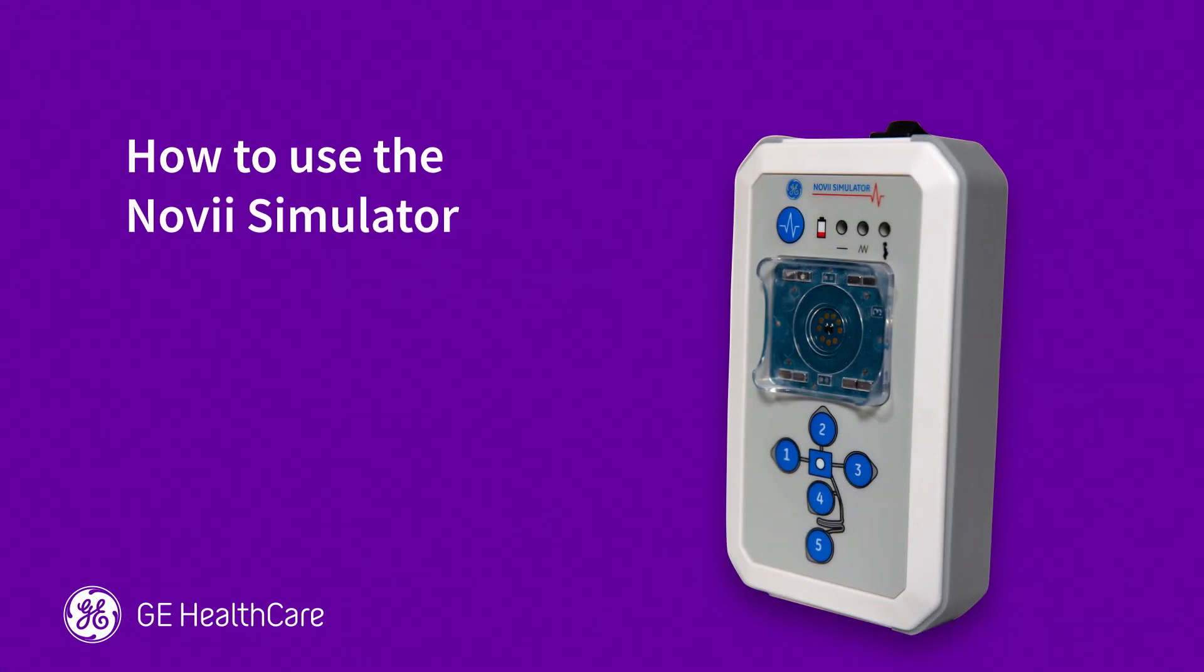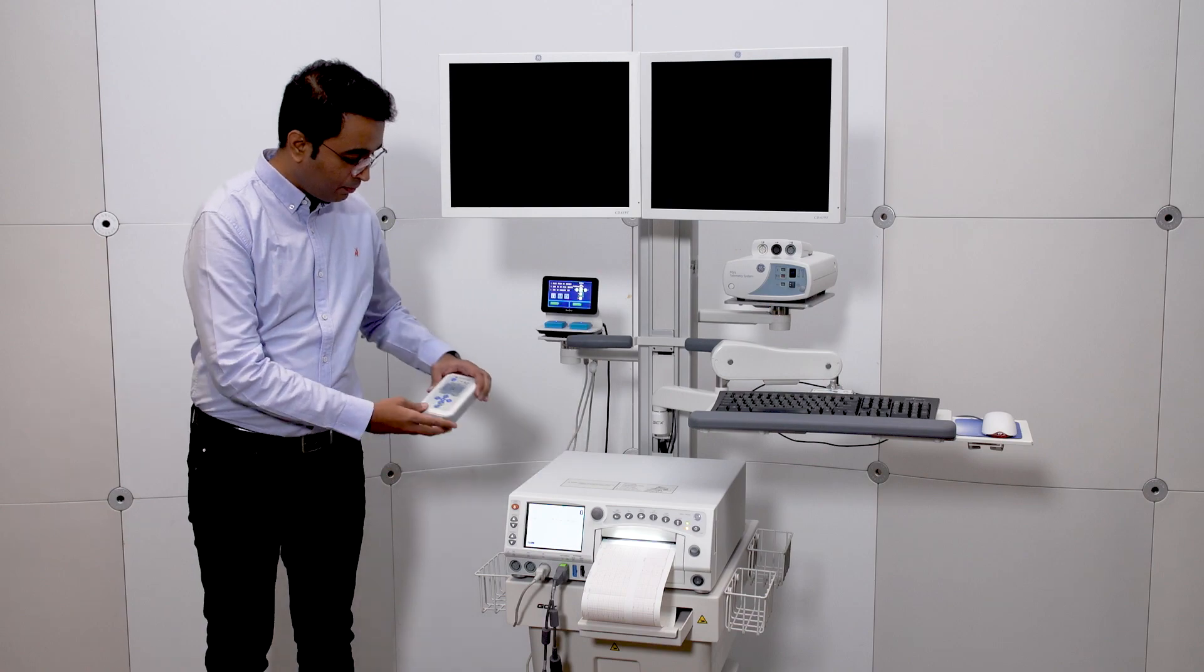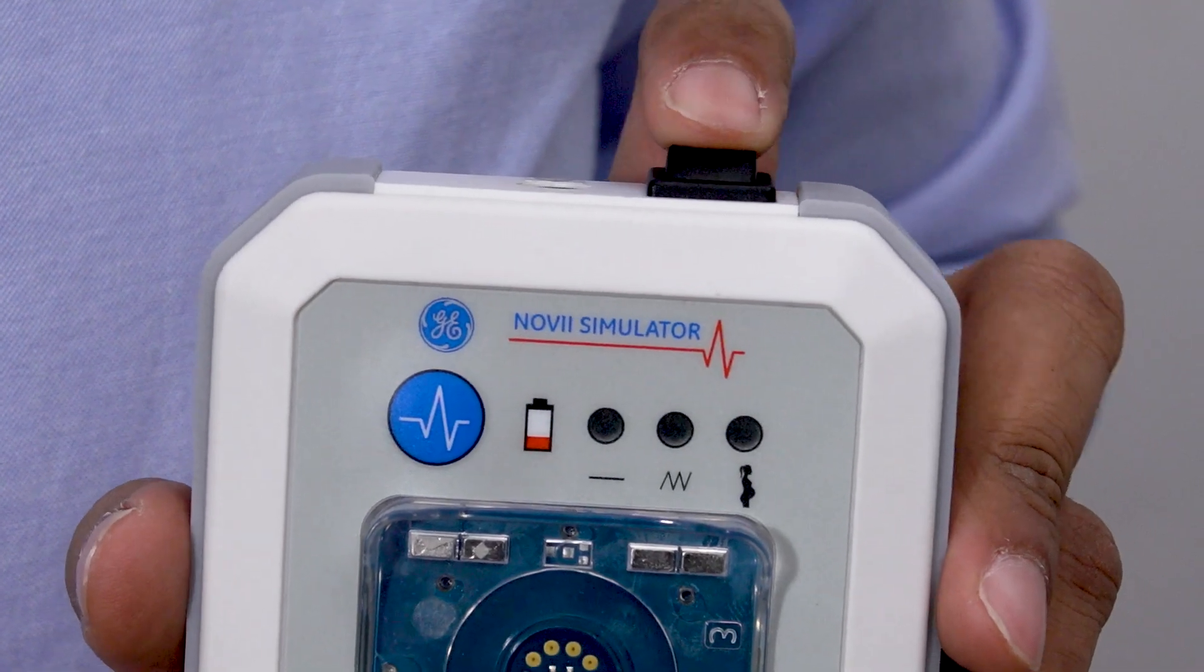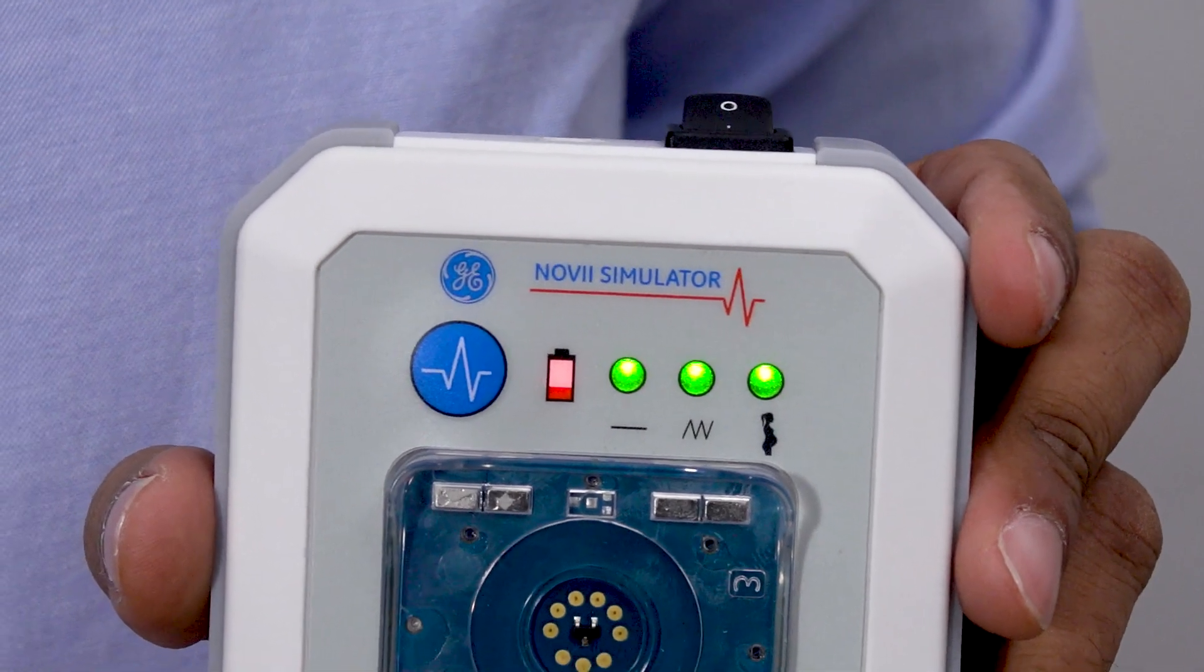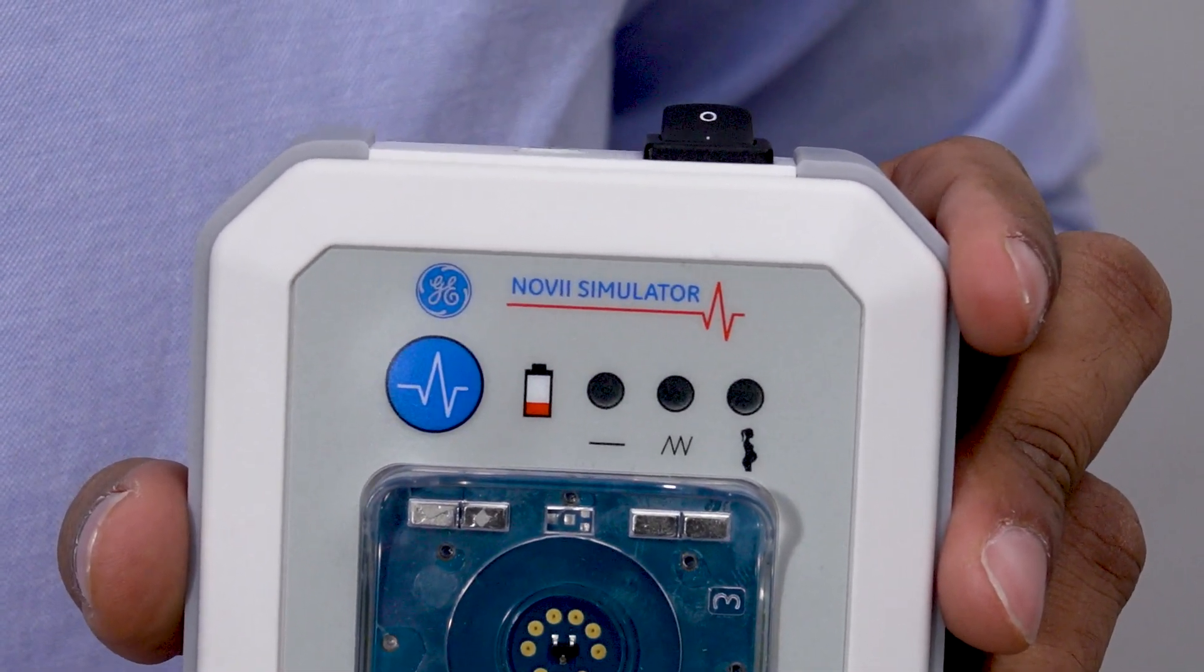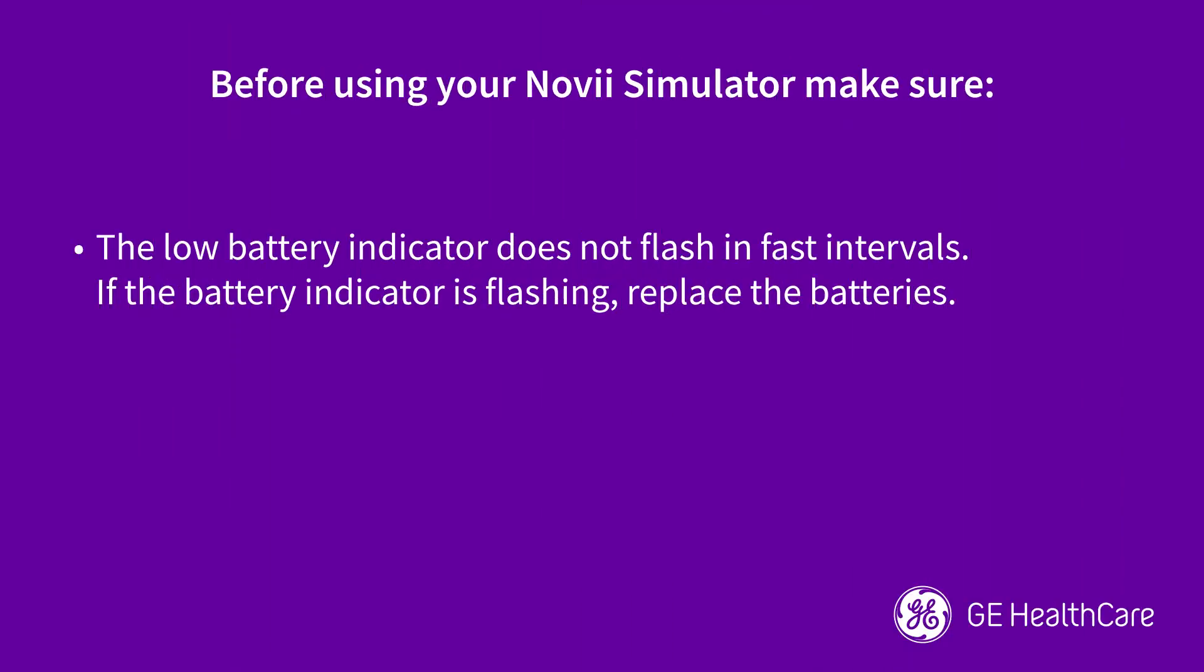Now that we are acquainted with the Novi simulator, let's cover how to use it. Press the power switch to turn the device on. As you can see, all LED indicators come on, followed by a beep. The constant mode is activated by default. Before we go further, make sure the battery indicator does not flash in fast intervals. If the battery indicator is flashing, replace the battery.